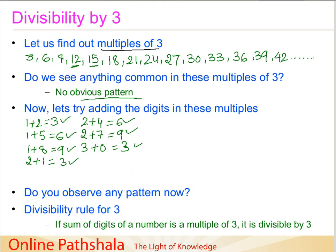In this case we are just getting all single-digit results. Let's try a bigger number — say 39. The sum of digits of 39 is 3 plus 9, which equals 12. So the pattern is: 3, 6, 9, 3, 6, 9, 12. All these sums are divisible by 3 exactly — they are multiples of 3. So the divisibility rule for number 3 is that if the sum of digits of a number is a multiple of 3, it is divisible by 3.